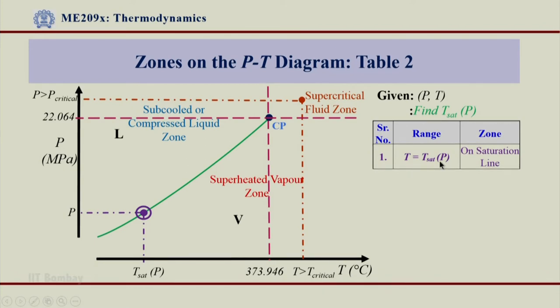If that is possible, that means this state lies on saturation line. It also means that the given point is nothing but P_sat(T) and T_sat(P). The coordinates of these points are respective saturated pressures and temperatures.